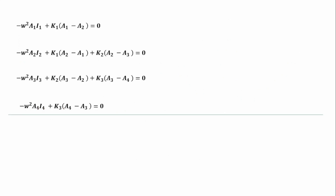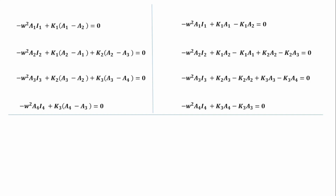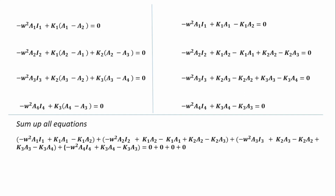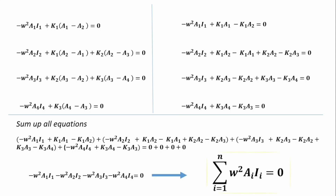These are our new four equations. If we expand and sum all of them, we find that some terms cancel themselves out. The result is: the summation of natural frequency squared multiplied by the amplitude and the second moment of inertia equals zero — that is, Σ(ω²·ai·Ii) = 0. This is a very vital equation applied in Holzer's technique.